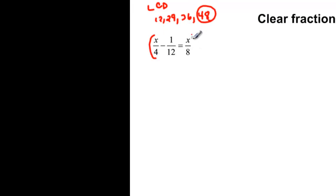Seems like a big number but remember we're going to reduce. So I'm going to take this 48, but I'm really going to say 48 times x over 4 minus 48 times that 1 over 12 is equal to 48 times x over 8. You've got to distribute the 48 to all three parts of the equation.